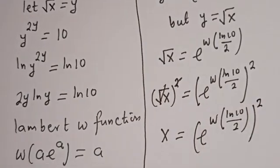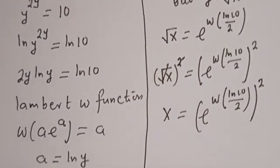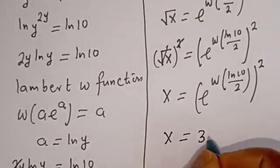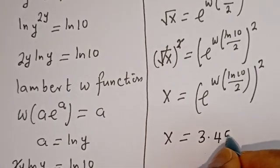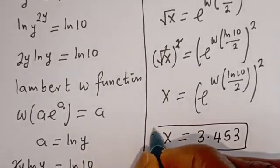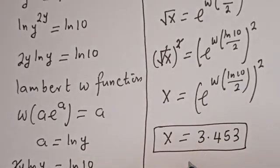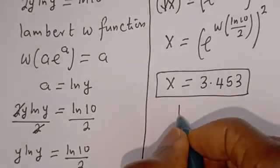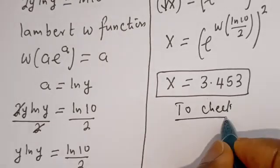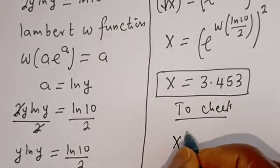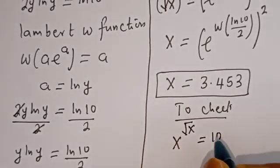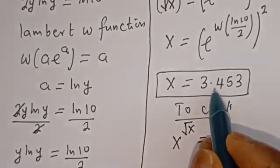Therefore, if you use a calculator, the value where s is equal to approximately 3.453, and this is the final answer. We can check to confirm if this answer is right. We have the given equation s to the power of square root of s is equal to 10, when s is equal to 3.453.